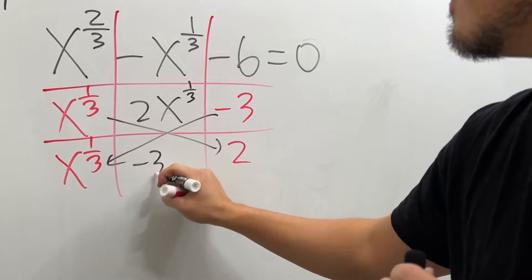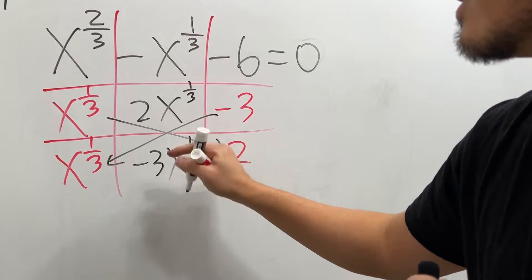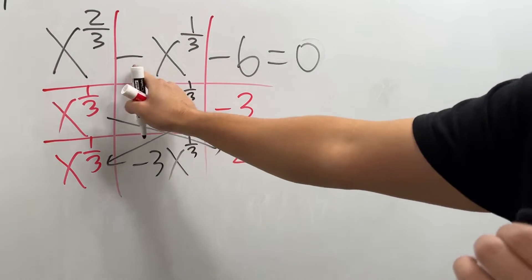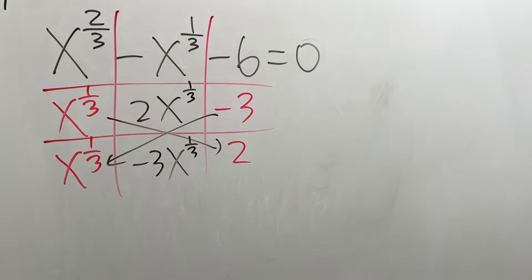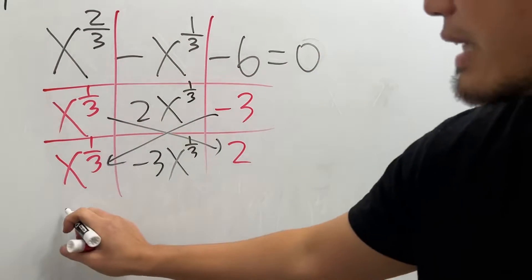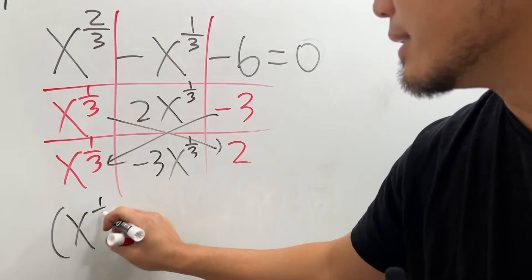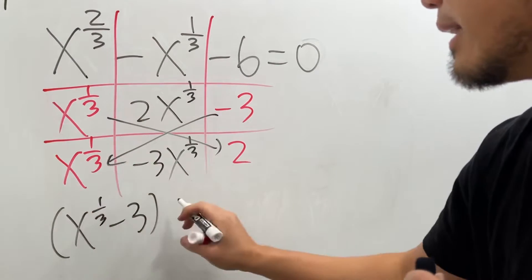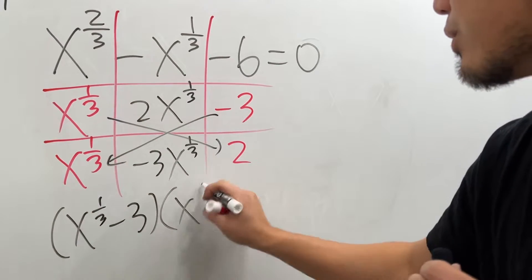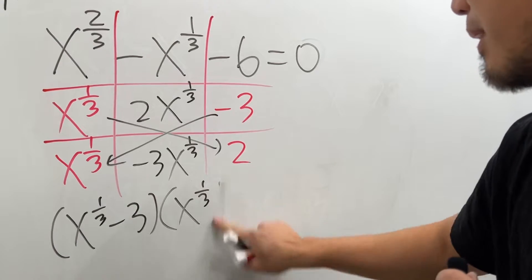Together, we will have negative 3x to the one-third power, and together we end up with negative 1x to the one-third power. So that means the factoring is: x to the one-third minus 3, times x to the one-third plus 2.